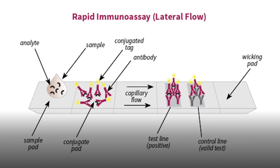These antibodies are specific for epitopes on the antigens of the patient sample, if that antigen is present. The antibodies get picked up by the fluid, bind to the antigen, and continue flowing across the filter paper. The flow then comes into contact with a strip on the filter paper impregnated with secondary antibodies specific to the same antigen. This traps the enzyme-linked antibodies, creating what is known as a sandwich ELISA.